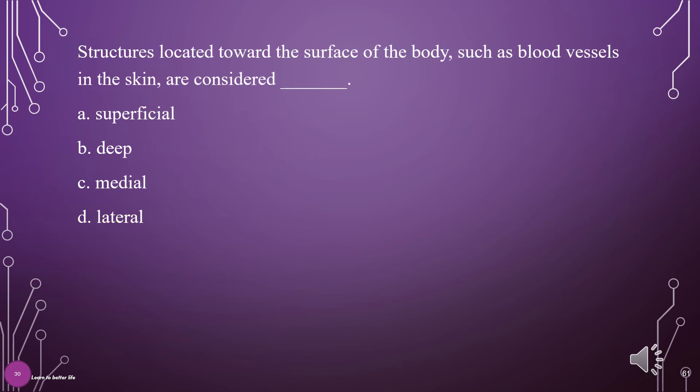Structures located toward the surface of the body, such as blood vessels in the skin, are considered what? A. Superficial, B. Deep, C. Medial, D. Lateral. The answer is A: Superficial.